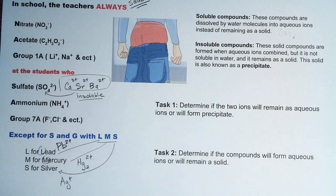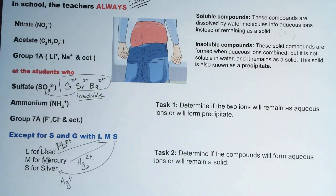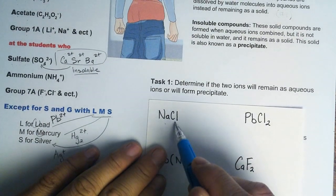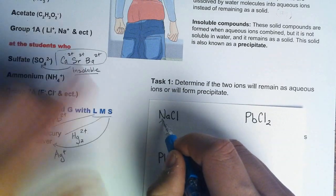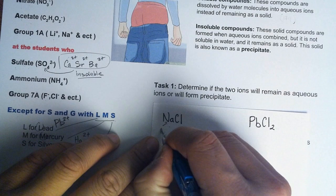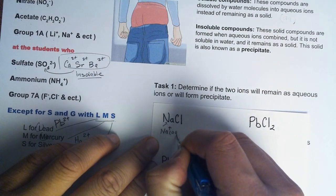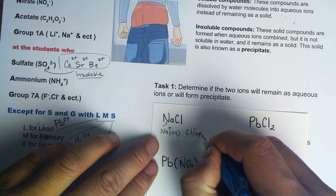Let's look at specific compounds — Task 2: determine if the compounds will form aqueous ions or will remain insoluble. First, let's look at sodium chloride. Sodium is in Group 1A, so we know right away it is always soluble. When it's soluble, it's going to become an ion — Na+ aqueous, and Cl- will also be in aqueous form as well.